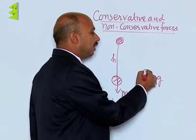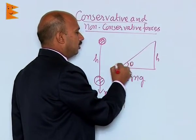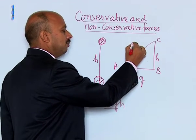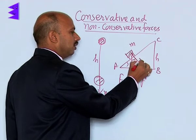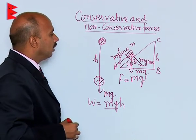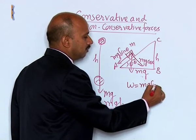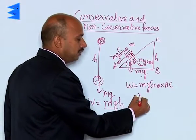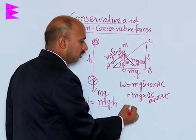Take another example — suppose you have an inclined plane where the height is h and the angle is theta, with points a, b, and c. An object of mass m is on the plane, so its gravitational force mg acts downward. Taking components: mg cosθ perpendicular to the plane and mg sinθ along the plane. You are moving the body from a to c, so work done equals mg sinθ × ac, which equals mgh.